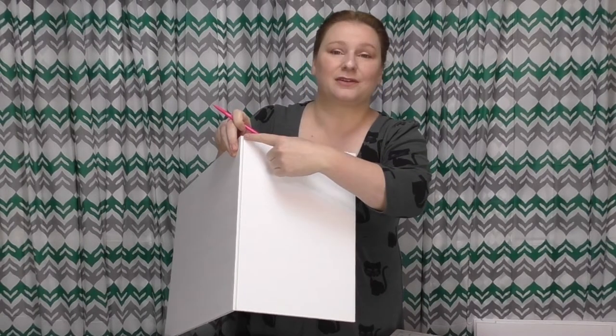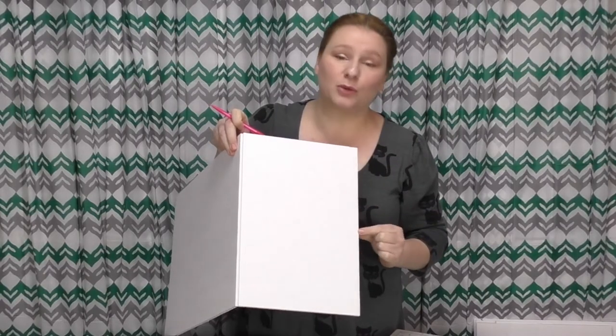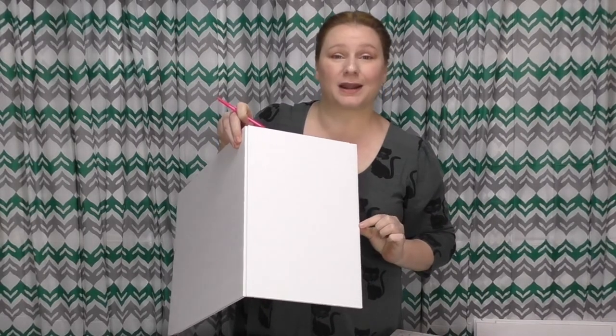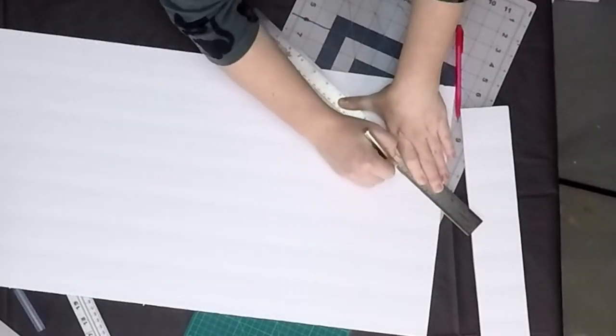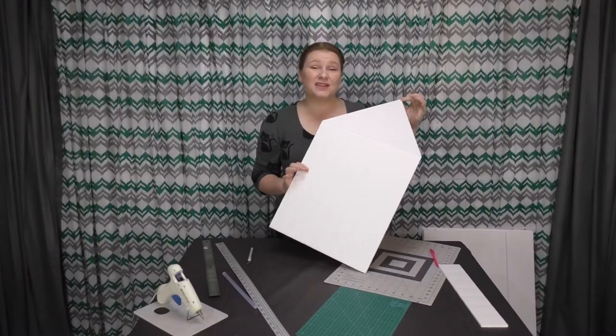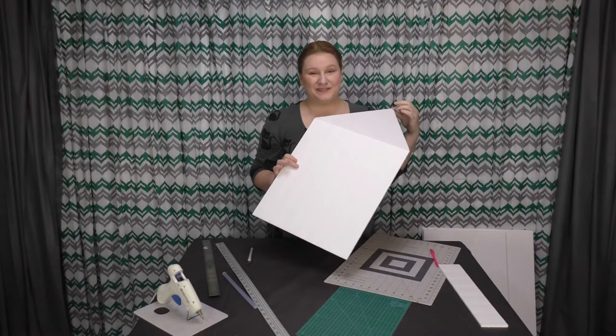So you're going to connect from this corner to that middle mark that you made, and this corner to this middle mark, and cut on those lines all the way through. Do this to that second piece that you have that's 15 inches wide. There we go.